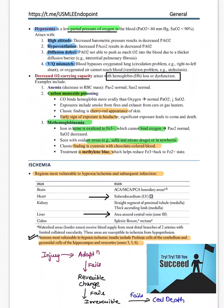Carbon monoxide poisoning was asked last year — it produces a cherry-red appearance, and the early sign is headache. Methemoglobinemia: normally iron is transported in ferrous form but gets converted to ferric form; the finding is cyanosis with chocolate-colored blood. Treatment for methemoglobinemia is methylene blue. So remember: carbon monoxide = cherry red; methemoglobinemia = chocolate colored.